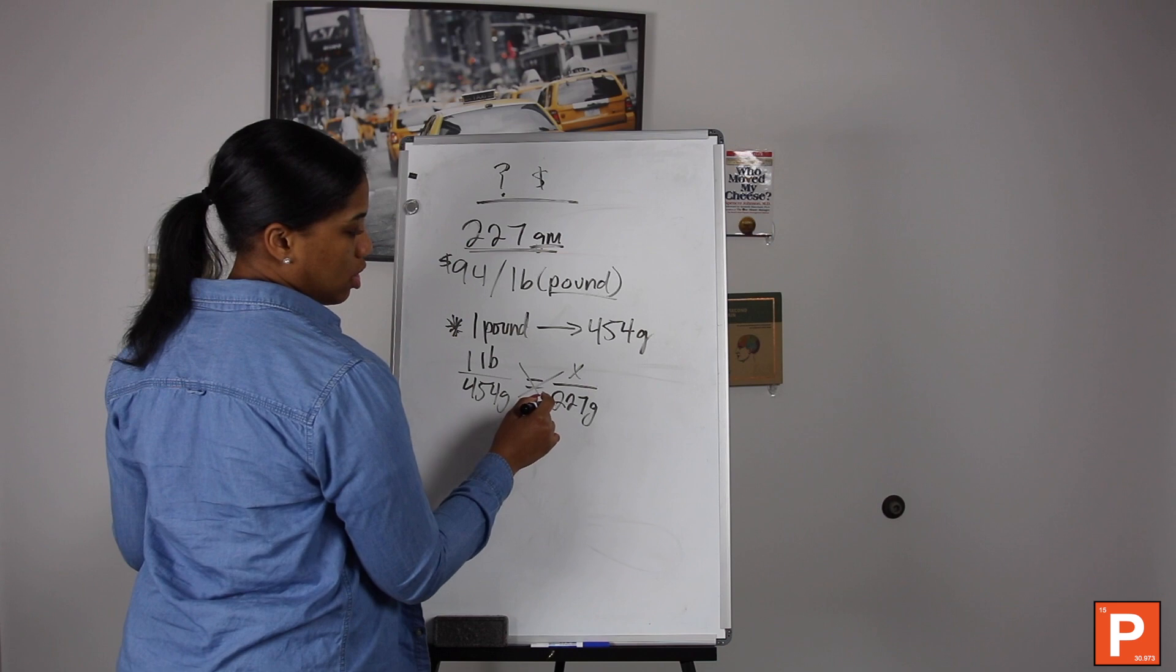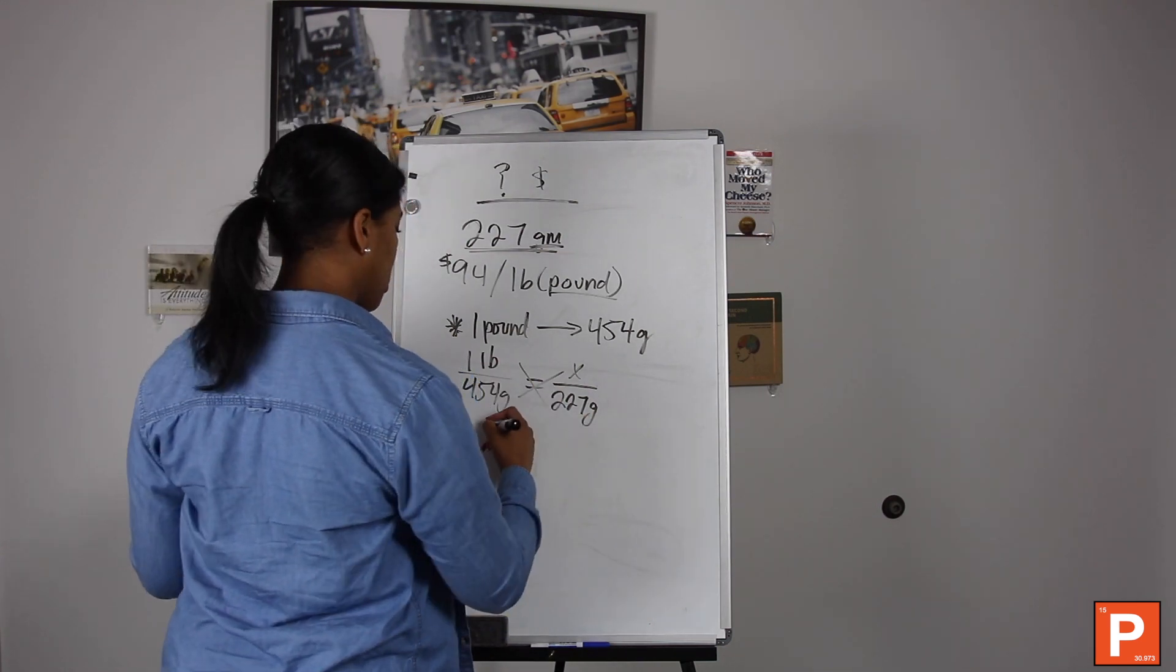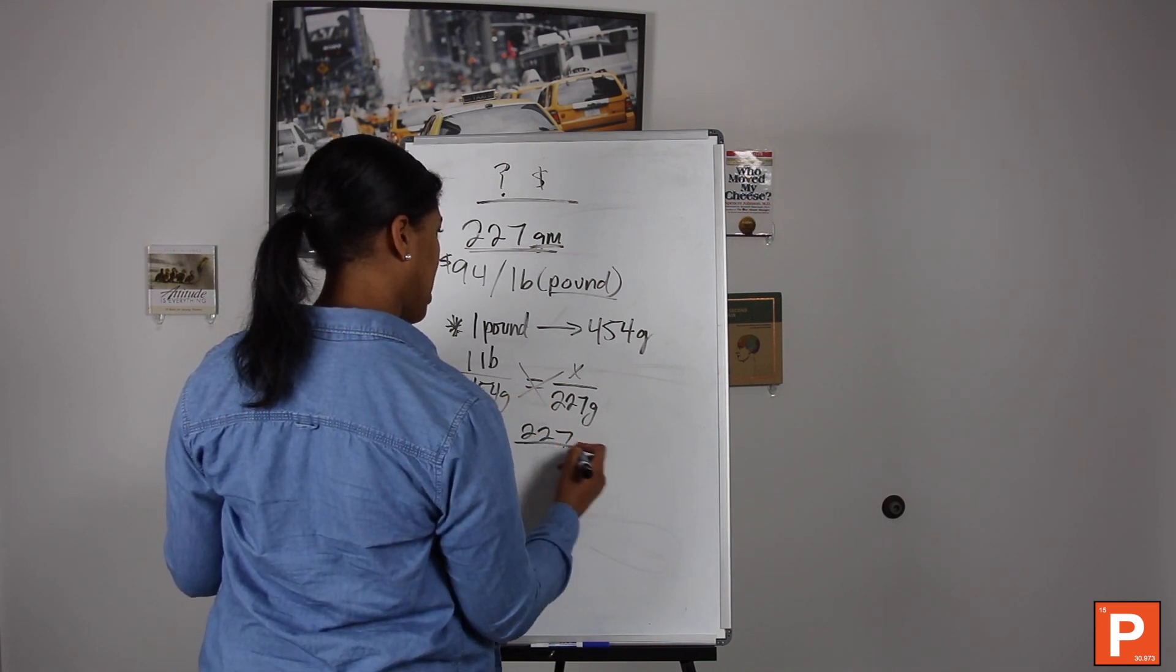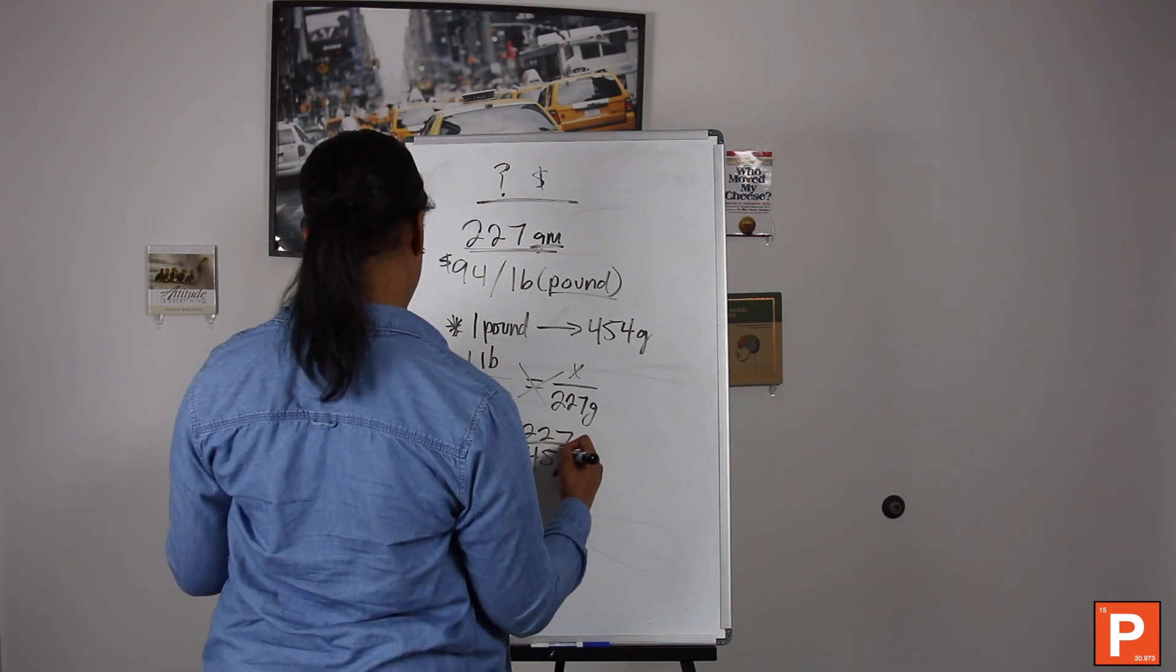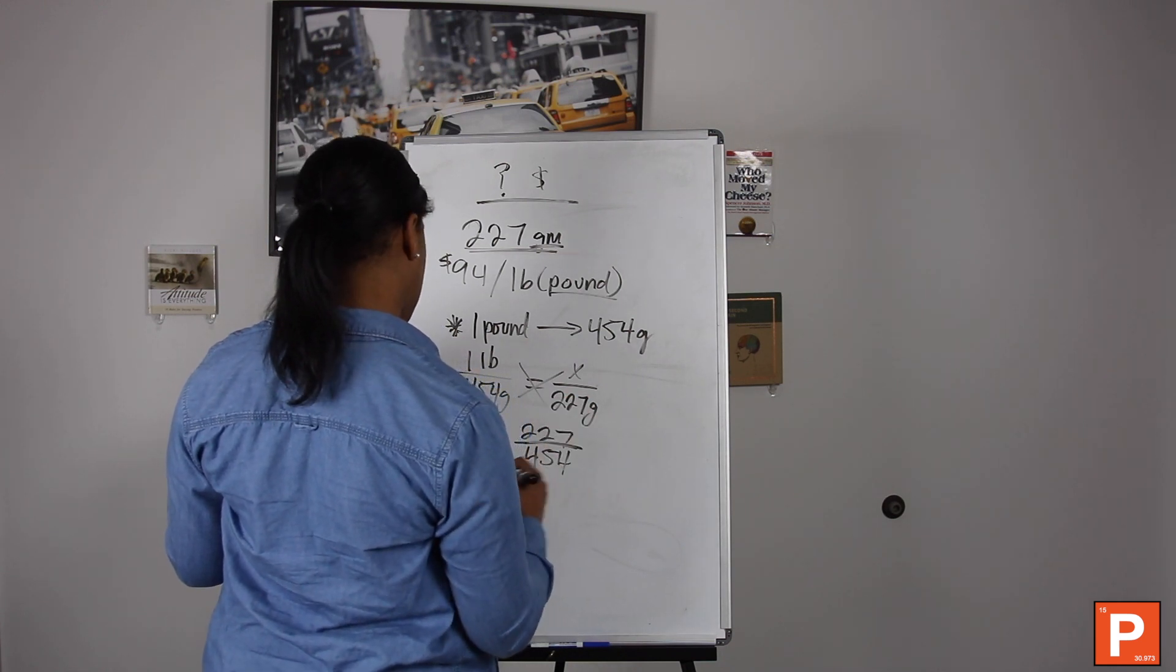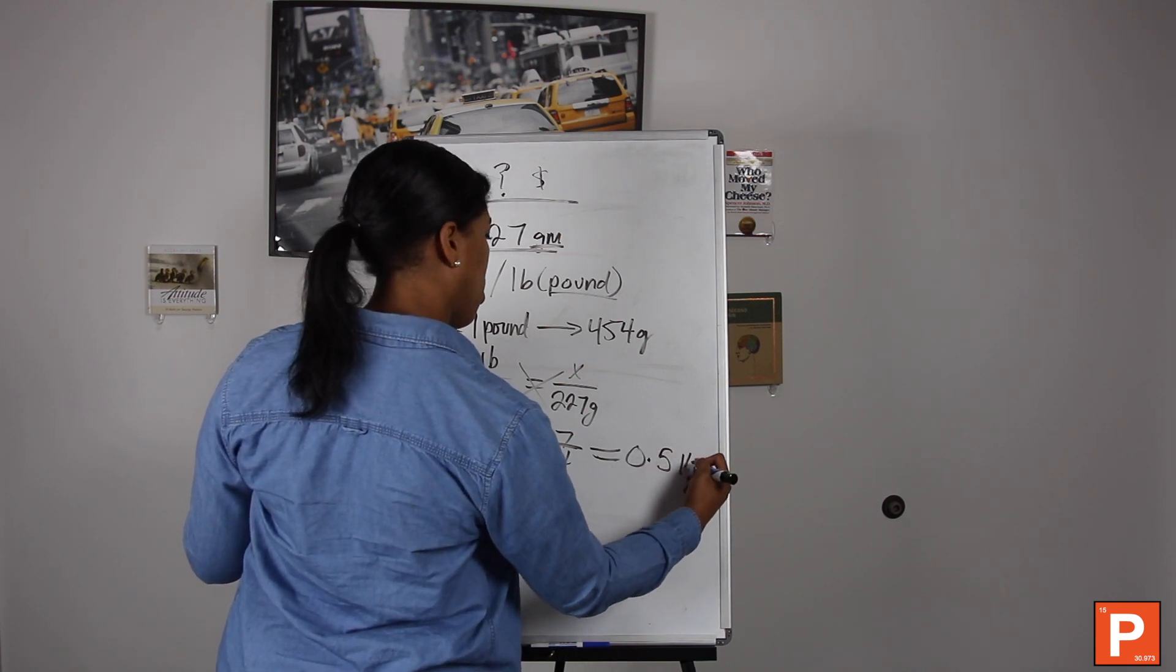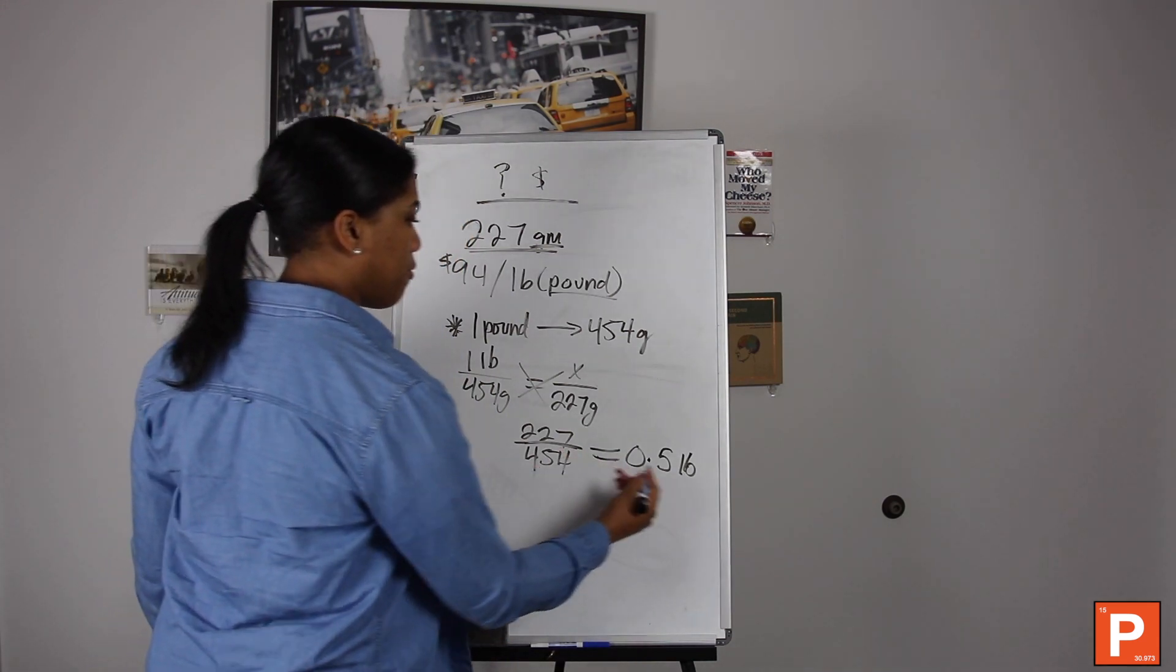Once you do the math you should get 454 grams times x, and then 1 times 227. That's just going to be 227. Of course you solve for x, so it should end up being 227 divided by 454, and the answer that you should get is 0.5 LB. So you're going to get half of a pound.